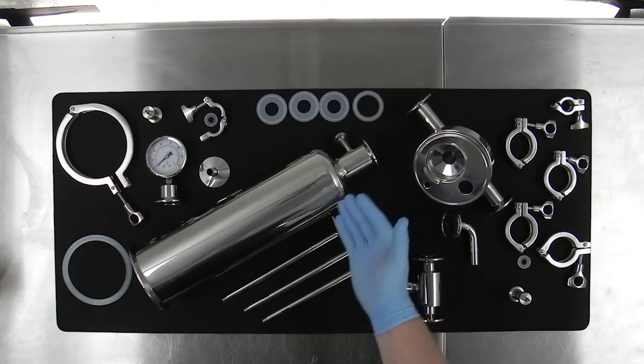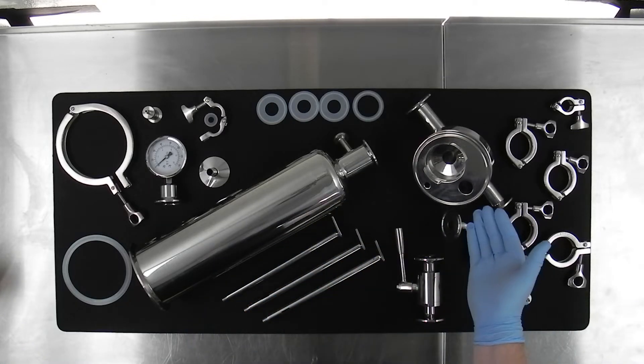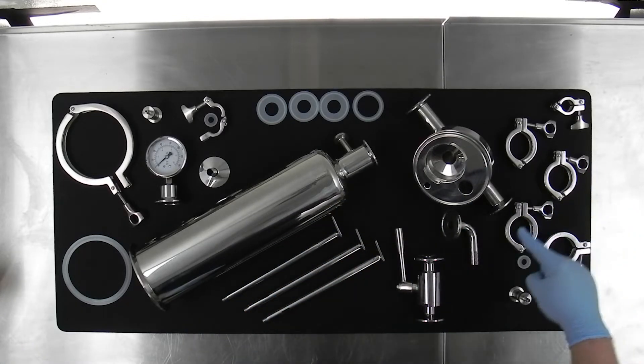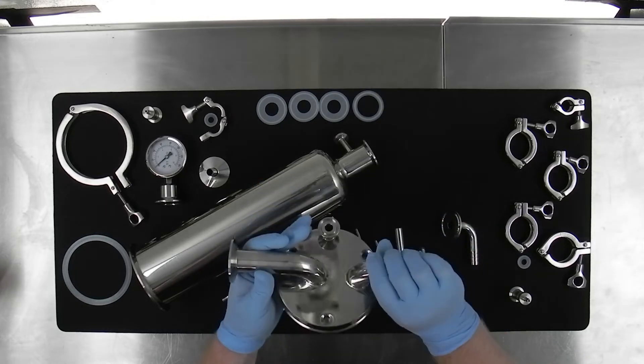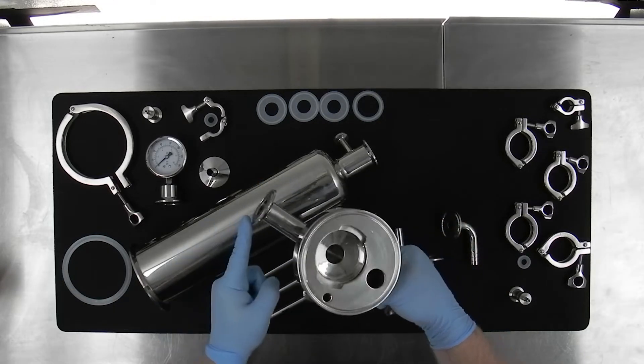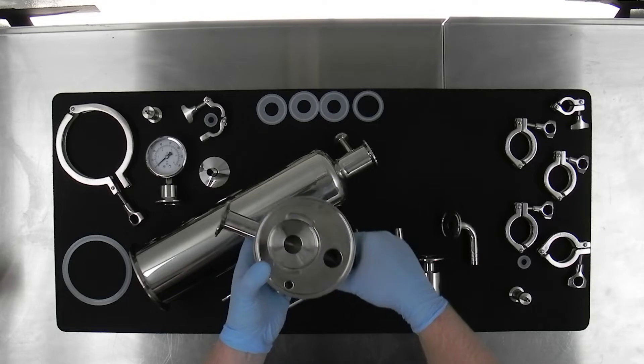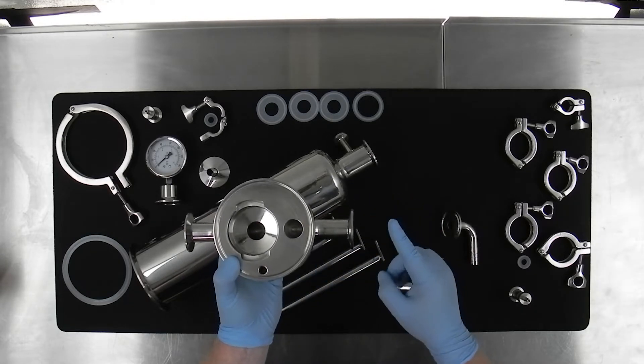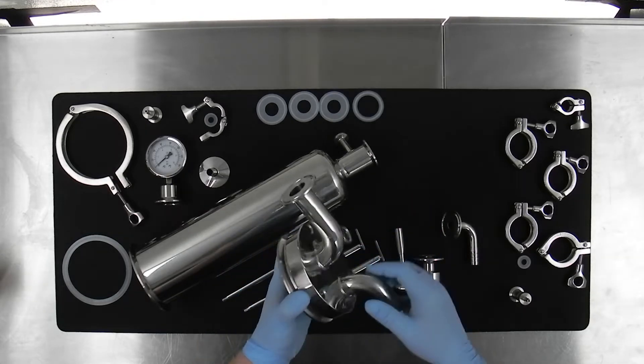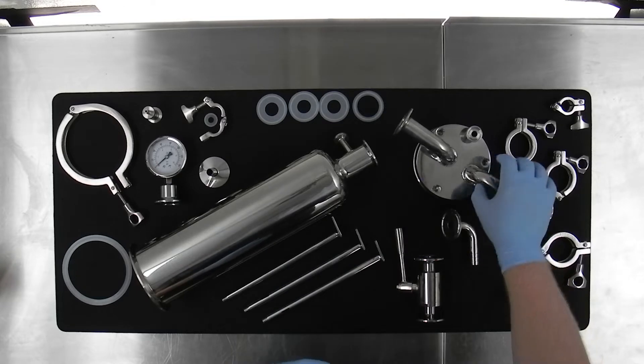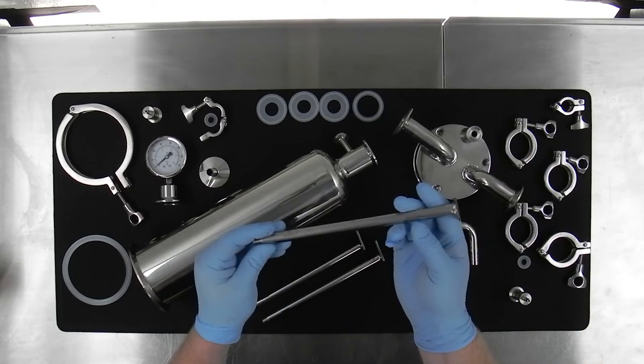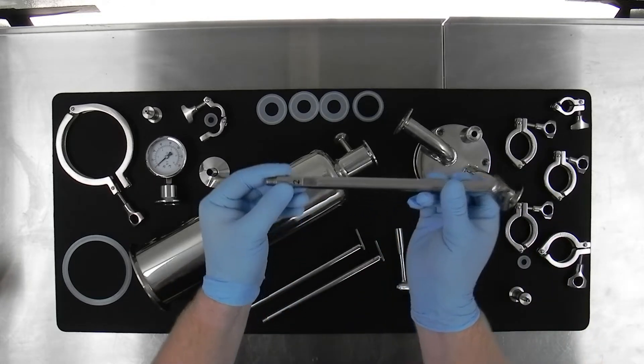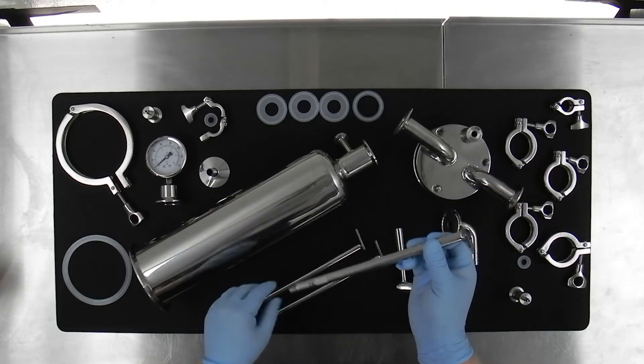It's time to assemble the filter housing. You'll see all of the various components of the filter housing laid out. You'll notice there is an outlet and an inlet side to the base. It's important to keep this in mind during assembly. There are three legs, each of which is numbered. Be sure to match the numbers to the numbers on the filter housing base.